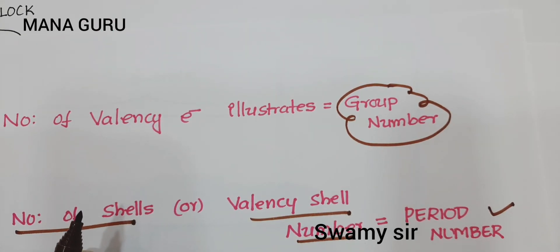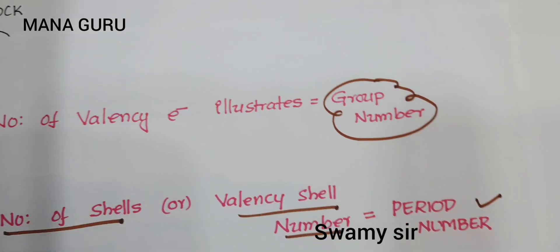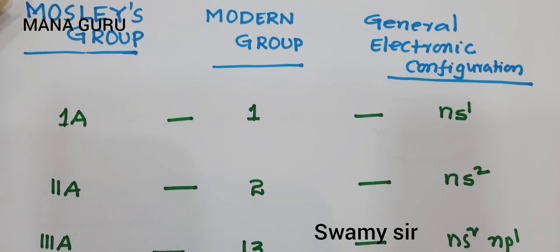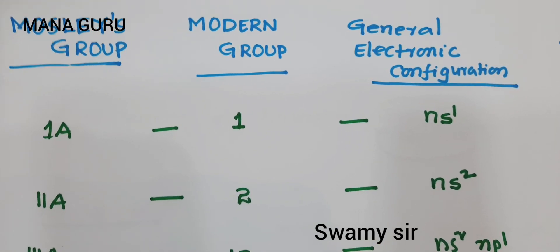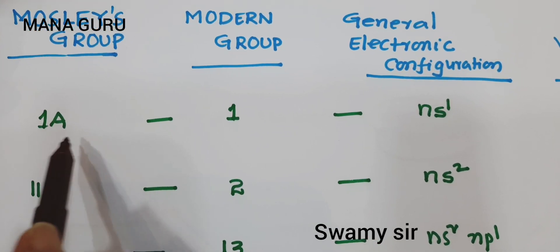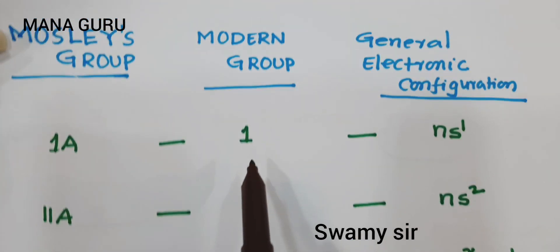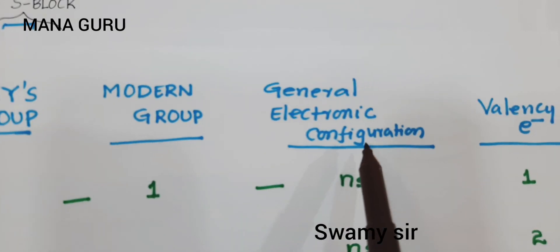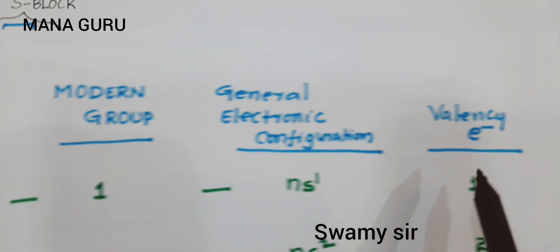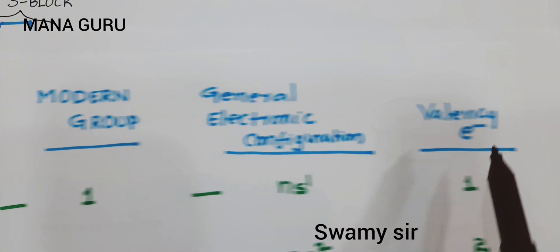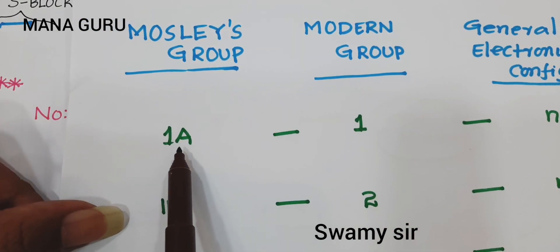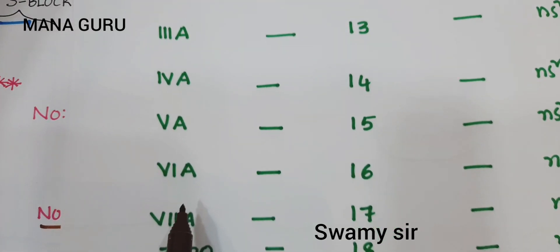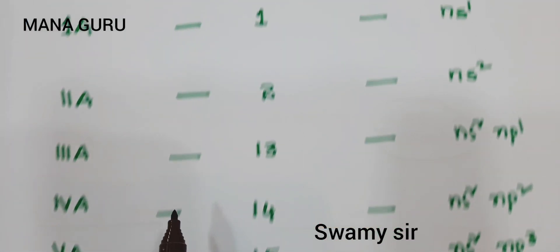Based on the valency electrons, how can you find out the group number? In the Moseley periodic table, the groups are 1A, 2A, 3A, 4A, 5A, 6A, 7A, and 0 group. The general electronic configurations are NS1, NS2, NS2 NP1, NS2 NP2, NS2 NP3, NS2 NP4, NS2 NP5, and NS2 NP6.